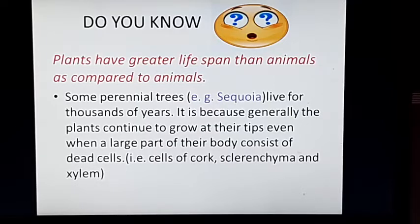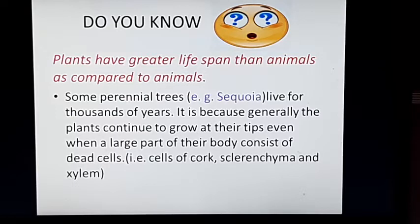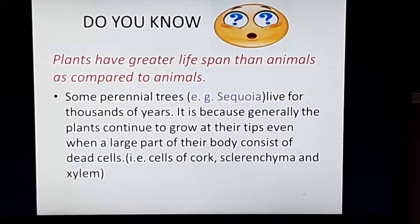Generally, we have observed that plants have a greater lifespan than animals. This is because plants continuously grow as they have meristematic tissue at their tips. They continue to grow even though they have dead tissue in their body. That is why plants have a longer lifespan than animals.